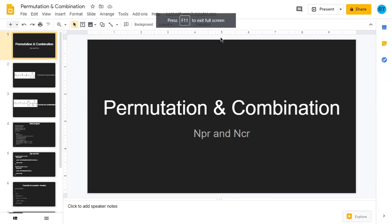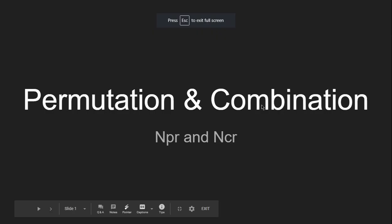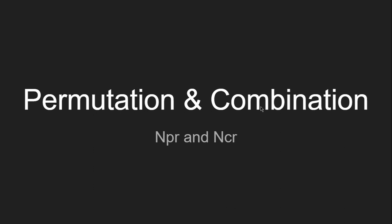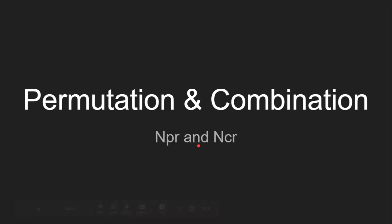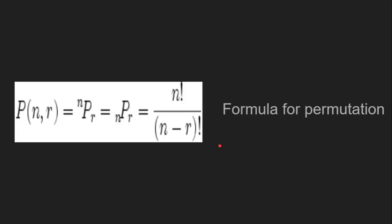Hello everyone. In this video we are going to see the program for permutation and combination. This program is basically based on the factorial function. Factorial of any number n is equal to n into n minus 1 into n minus 2 into n minus 3, and so on up to 1. The permutation and combination formulas are totally based upon the factorial formula.